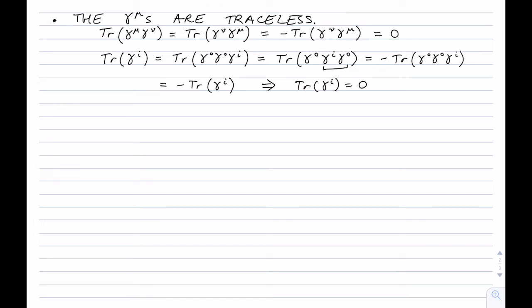You can do the same for gamma^0 to show that one is also zero. So all the gamma matrices are traceless.